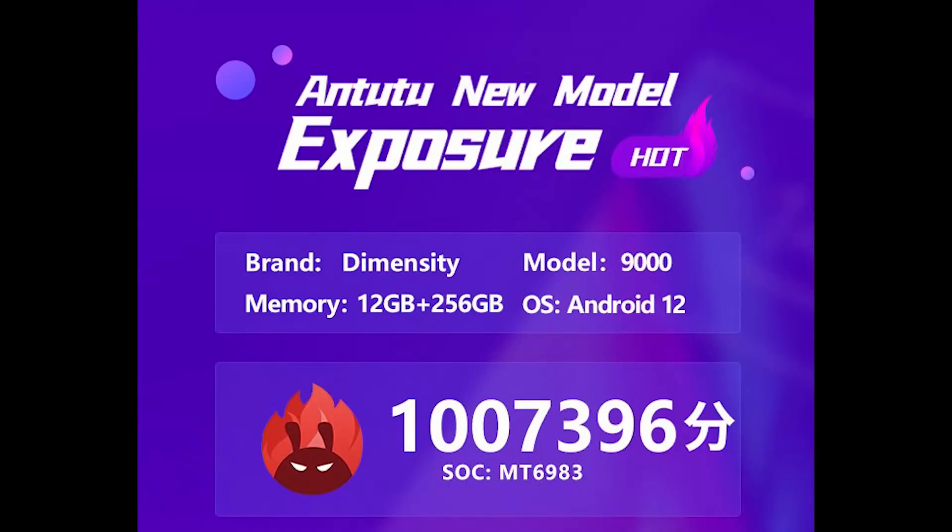MediaTek claims over 4,000 for the Dimensity 9000's Geekbench multi-threaded score — unverified, but their own figure. For Antutu, which covers both CPU and GPU, the Google Tensor scores around 780,000, the Snapdragon 8 Generation 1 scores 977,000, and leakers suggest the Dimensity 9000 can score over a million. Across single-threaded, multi-threaded, and Antutu scores, it looks like the Dimensity 9000 is the clear winner.